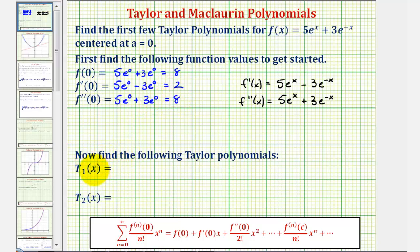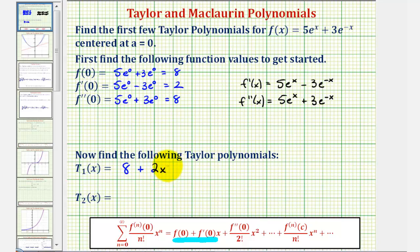So now to find the degree one Taylor polynomial, identified here by t sub one of x, we'll only be using the first two terms of the Maclaurin series. So we would have f of zero, which is eight, plus f prime of zero times x, which would be two x. Notice how this is a linear approximation of the given function at x equals zero, which would just be the tangent line at x equals zero.